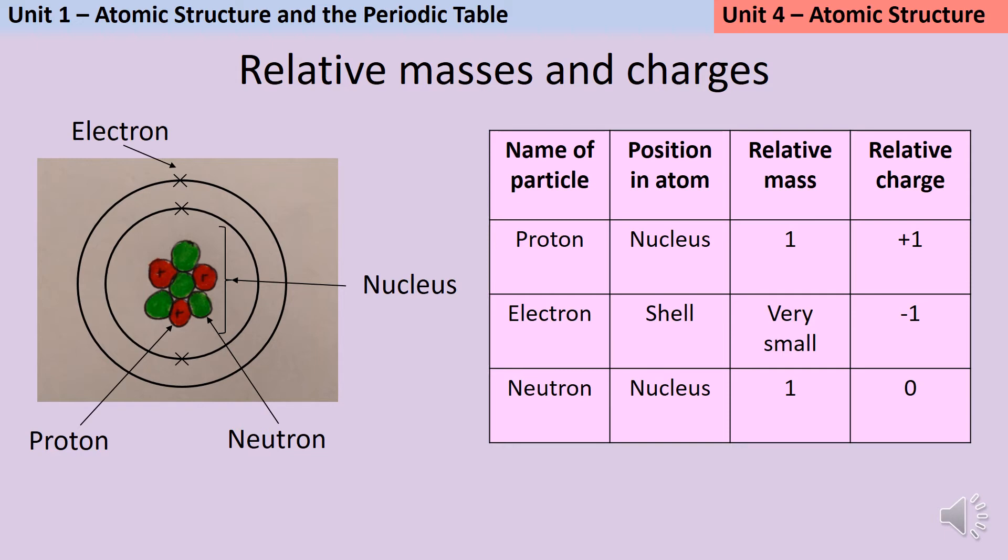The atom is made up of three different subatomic particles—protons, electrons, and neutrons. The protons and neutrons are found in the nucleus at the center. In diagrams the nucleus is drawn quite large, but in reality the nucleus only makes up about one ten thousandth of the size of the atom.